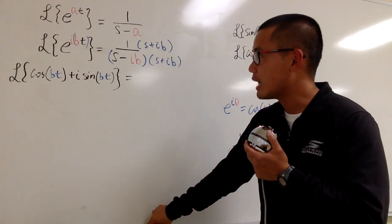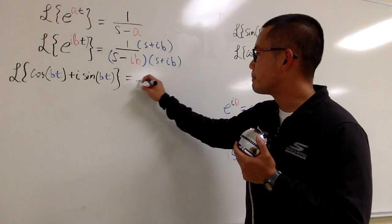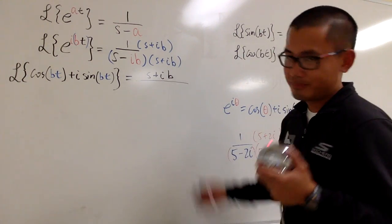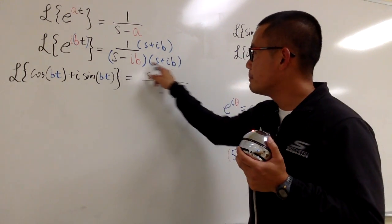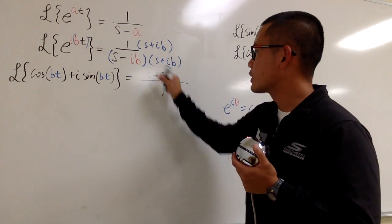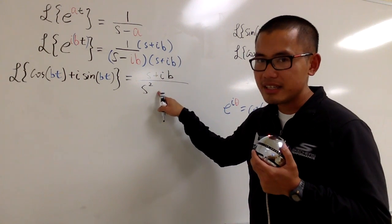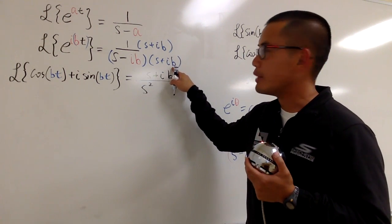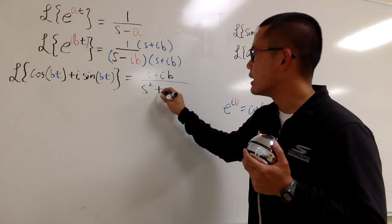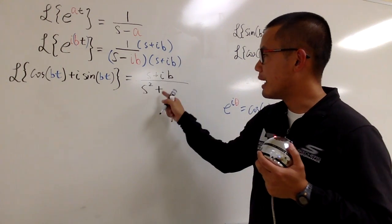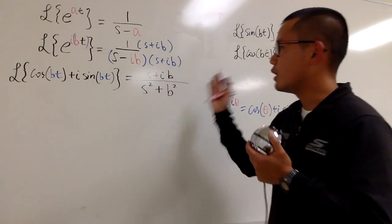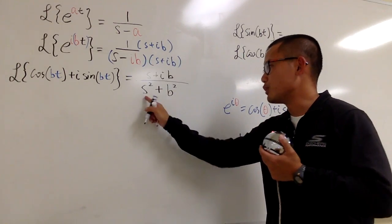Let's see what do we end up with. On the top, 1 times this is nice and easy, which is s plus ib. On the bottom, this is the difference of two squares. What I can do is, s squared, and then we'll have to minus this square. But you know we have minus. However, i times i is negative 1, so this becomes plus. i times i is negative 1, but then minus becomes plus. And you also have to square the b, so we have s squared plus b squared.